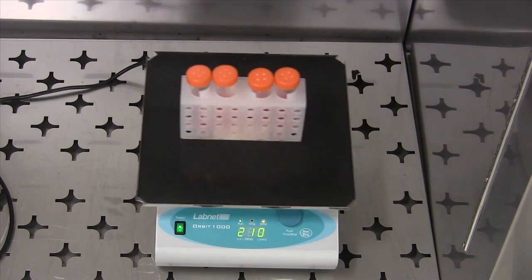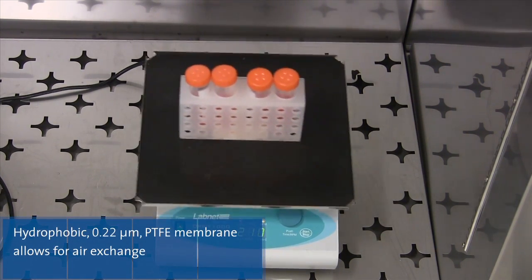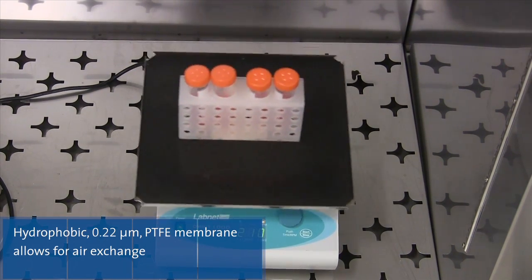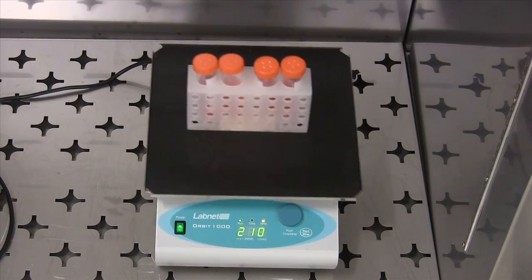The new Corning mini bioreactor consists of a 50mL centrifuge tube with a vented cap. The four openings in the cap are vented with a hydrophobic 0.22 micrometer PTFE membrane which allows for gas exchange.